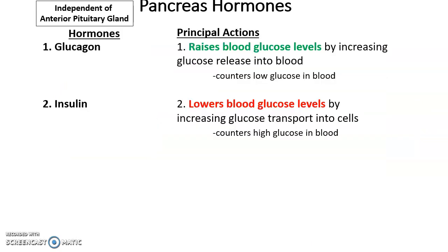The pancreas produces two important hormones: glucagon and insulin. Glucagon's job is to raise blood glucose levels. If the pancreas detects that glucose levels in the blood are low, it secretes glucagon, which goes to various tissues — like the liver, fatty tissue, and muscle tissue — and causes them to increase the release of glucose into the bloodstream.